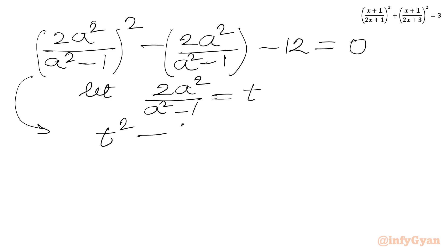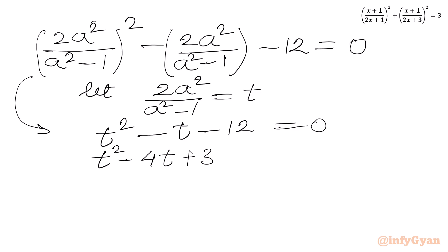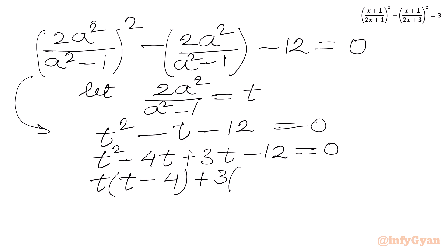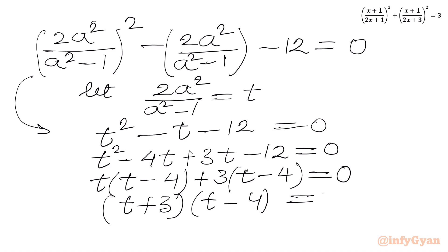We factor: t² − t − 12 = 0 by writing −t as −4t + 3t. Taking t common from the first two terms gives (t−4), and taking 3 common from the last two terms gives the same bracket (t−4). So the factorization is (t+3)(t−4) = 0, giving t = −3 or t = 4.